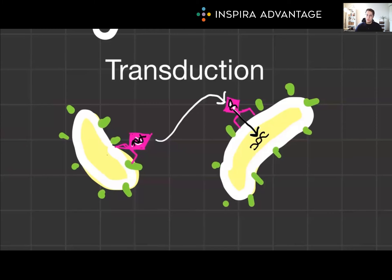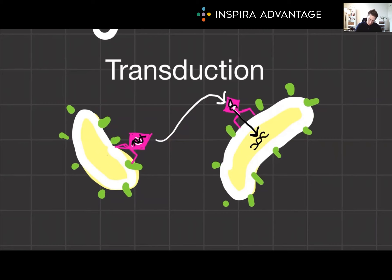A more sinister mechanism is transduction. Viruses, especially bacteriophages, can mistakenly package bacterial DNA and transfer it to another bacterium during infection. It's like a genetic version of the message getting lost in translation, leading to new bacterial gene combinations. We see a bacteriophage land on a bacterium in pink, accidentally take up some of the bacterium's DNA, then attach to a new bacterium and infect it with DNA from the original host. If the second bacterium survives infection, you've got genetic recombination.